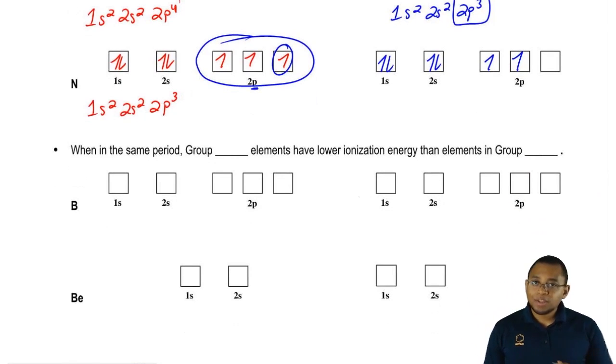Now, we're going to say there's another exception. When in the same period, group 3A elements have a lower ionization energy than group 2A.